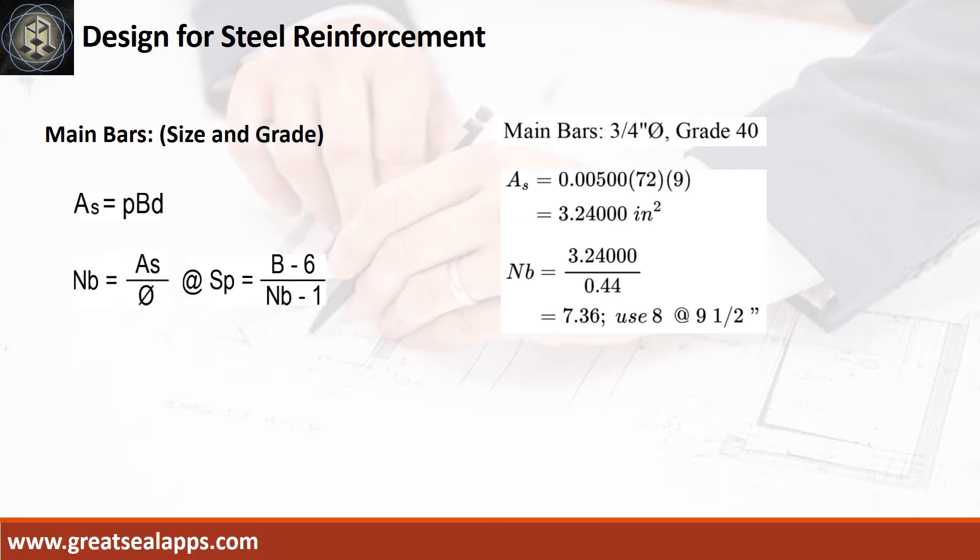Given rho equals 0.005, B equals 72 inches, and D equals 9 inches, the area of steel for main bars is 3.24 square inches, and the number of bars for 3/4 inch diameter is 8.